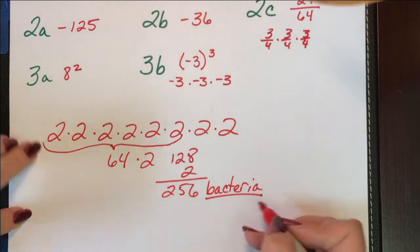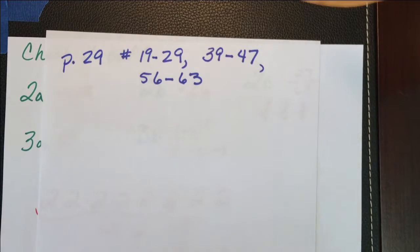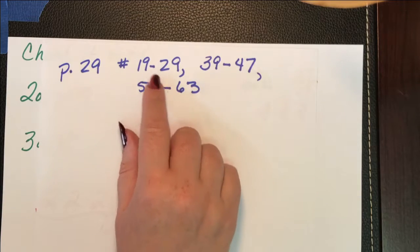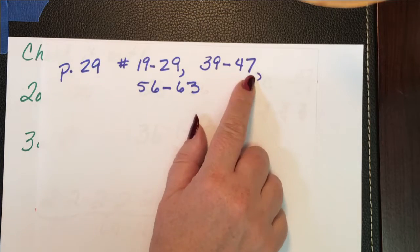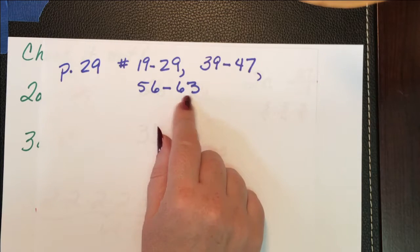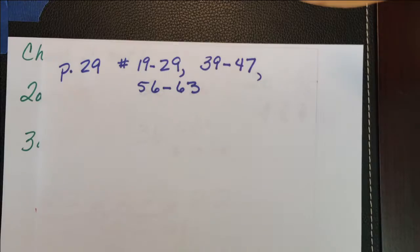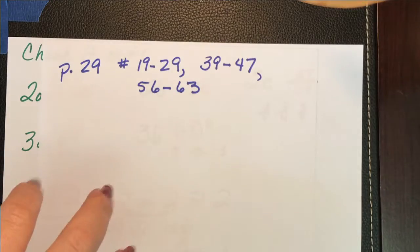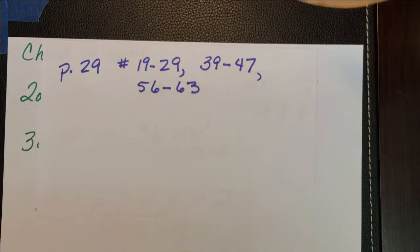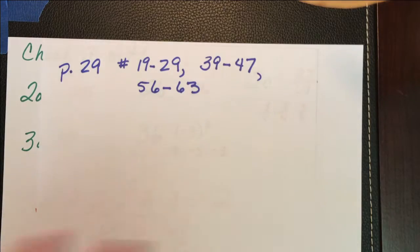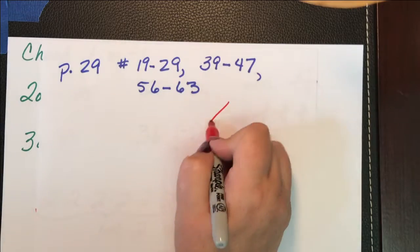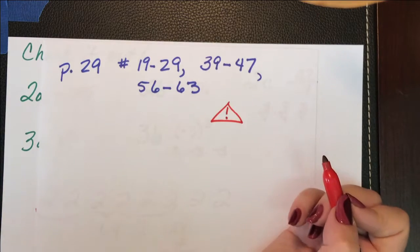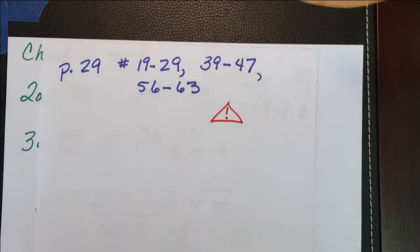And that's it for this section. So the homework for section 4, which starts on page 29, and we're only doing one section tonight, numbers 19 through 29, numbers 39 to 47, and numbers 56 to 63. And this will give you a good balance of different ways to look at all of these problems so the concept becomes concrete in your head. Please bring me any questions you have, mark any problems that you don't understand with a hazard sign, and let me know how it goes tomorrow. I'll see you then.